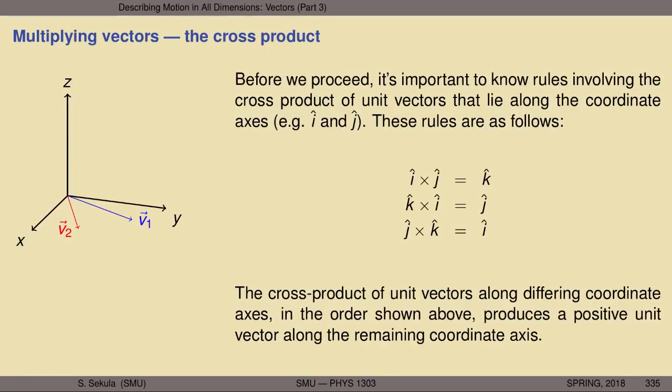Before we proceed, it's important to know the rules involving the cross product of unit vectors that lie along the coordinate axes. I-hat lies along the X-direction, J-hat lies along the Y-direction, and K-hat lies only along the Z-direction. These three unit vectors are all at right angles to each other — I-hat is perpendicular to J-hat, J-hat is perpendicular to K-hat, and I-hat is perpendicular to K-hat. They're the building blocks of all other vectors.